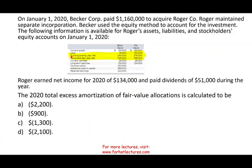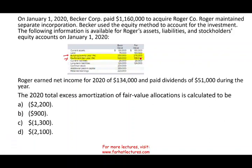You always take land out of the excess amortization calculation because land is not depreciable — land is not amortized, we don't expense land. Although we paid more for it ($193,000 fair value), we simply keep it on the books at $193,000. The remaining accounts that deal with excess amortization are building and equipment. For the building, there is an excess of $26,000 — if we purchased the building separately we would have paid $276,000, which is $26,000 more than its book value.